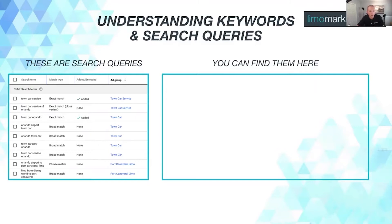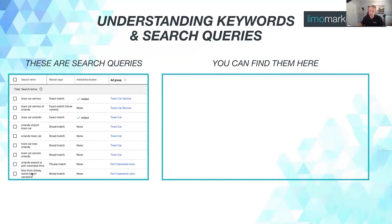When you do go to the search term report, you will see what you see on the left-hand side of the screen. Those are all user-generated — these are actual searches someone actually made. I got this screenshot from a limo company that's in Orlando. As you can see, 'limo from Disney World to Port Canaveral' — there's just so much data that can be had from this search query report.